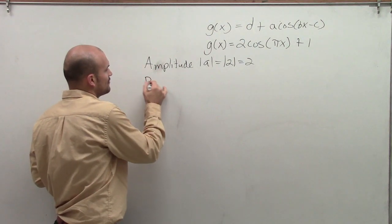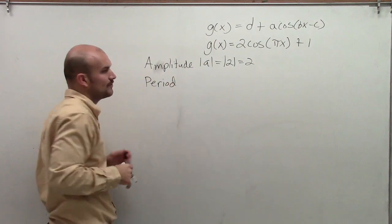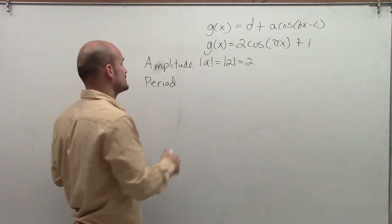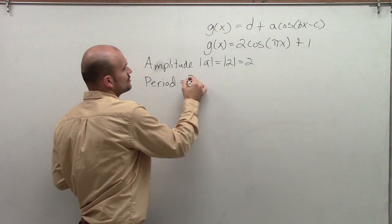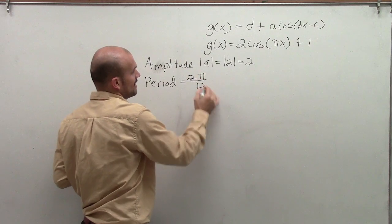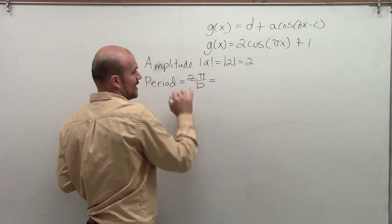Now I'm going to look at the period, the amount of distance that it's going to take for your graph to complete one complete cycle. So our period is going to be represented as 2 pi divided by b, where in this case, we have pi.